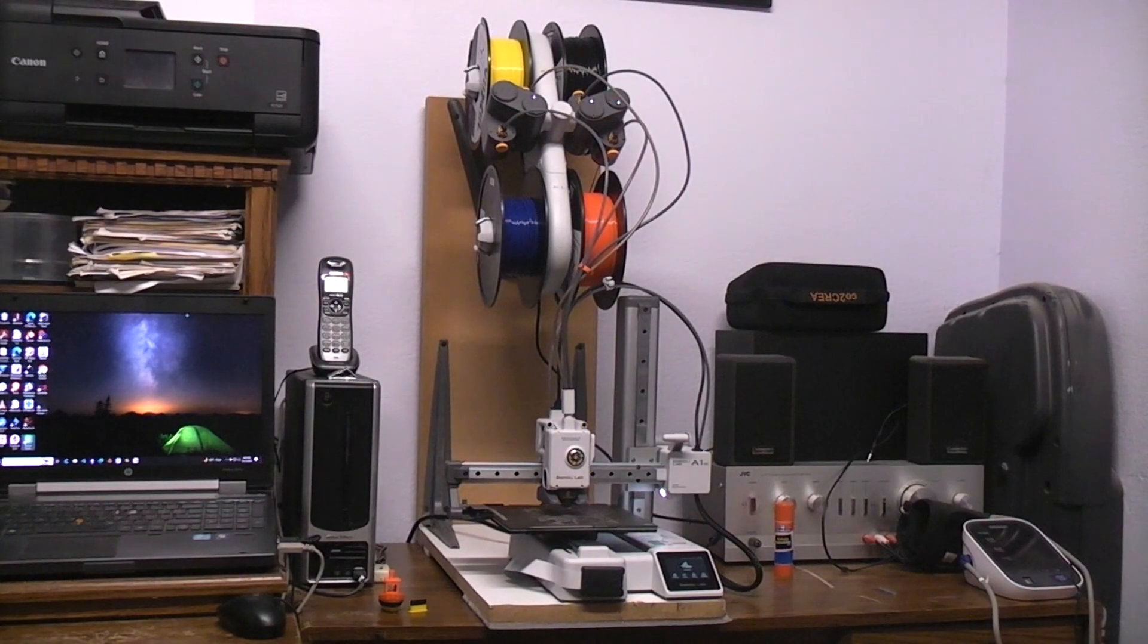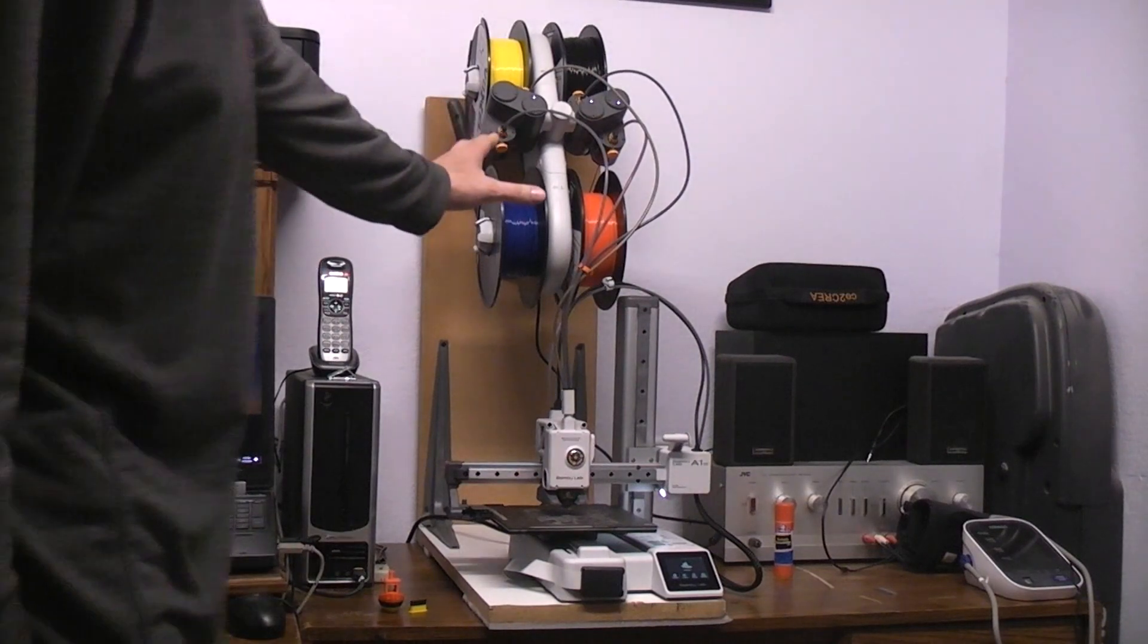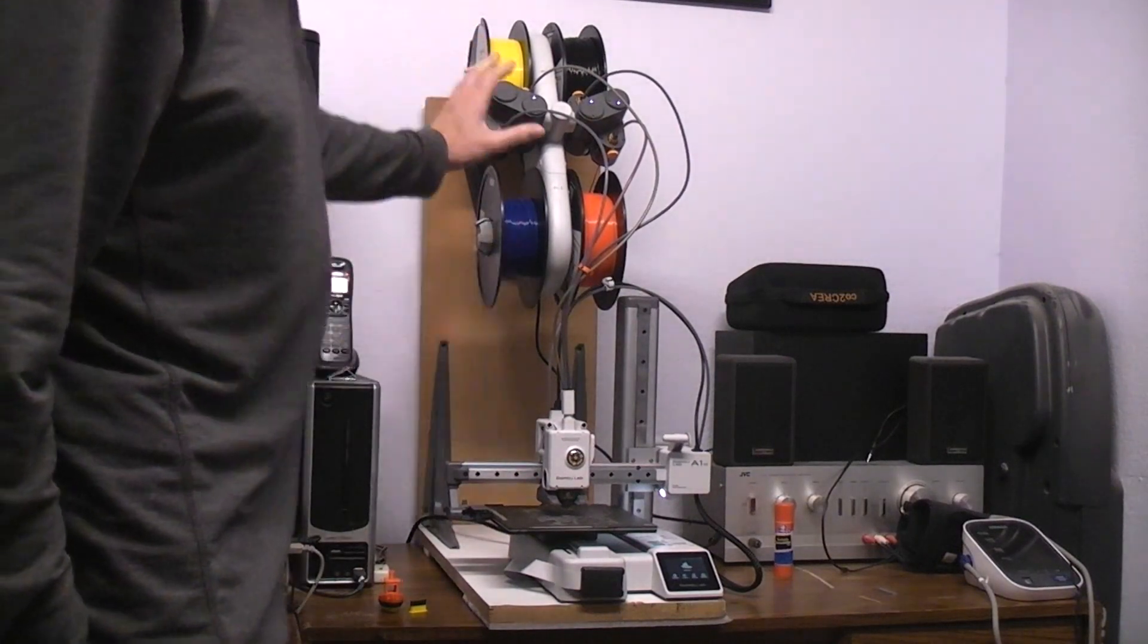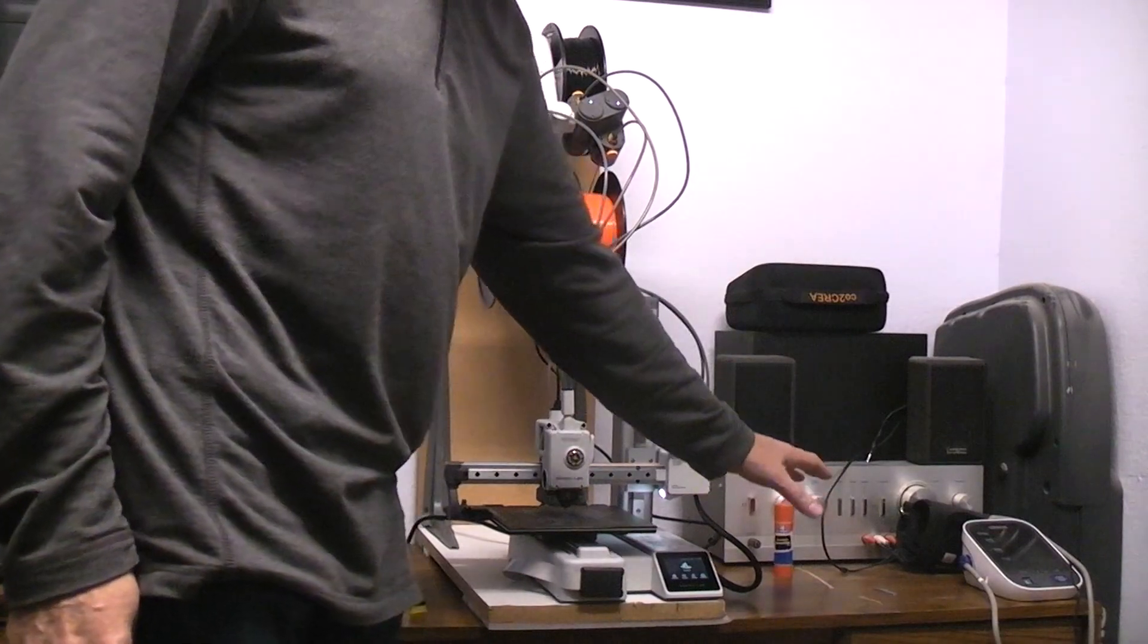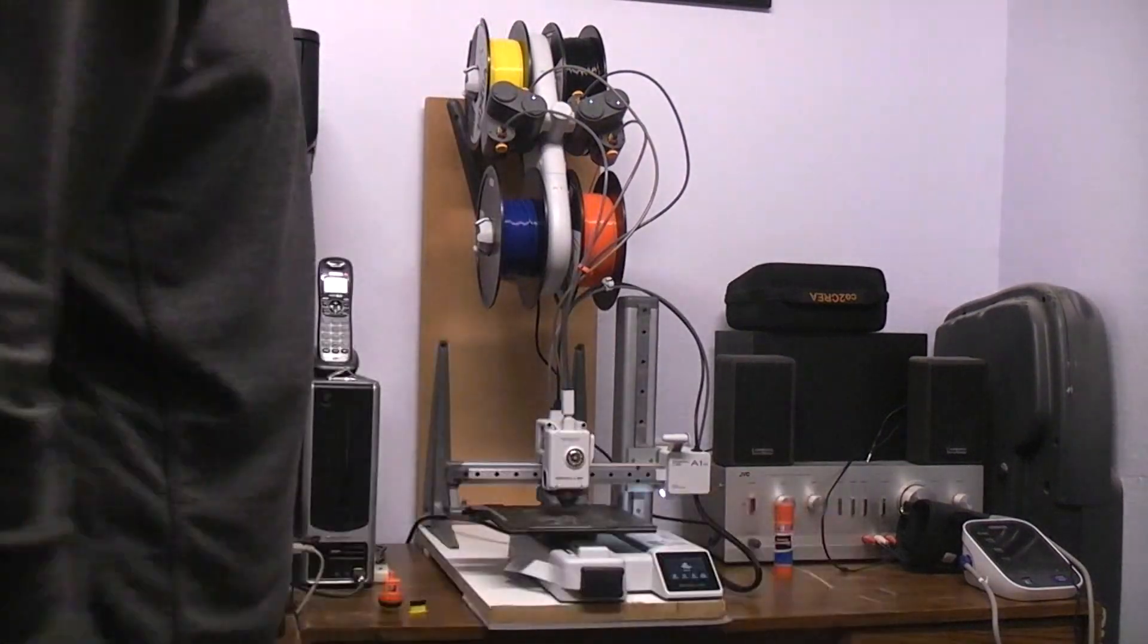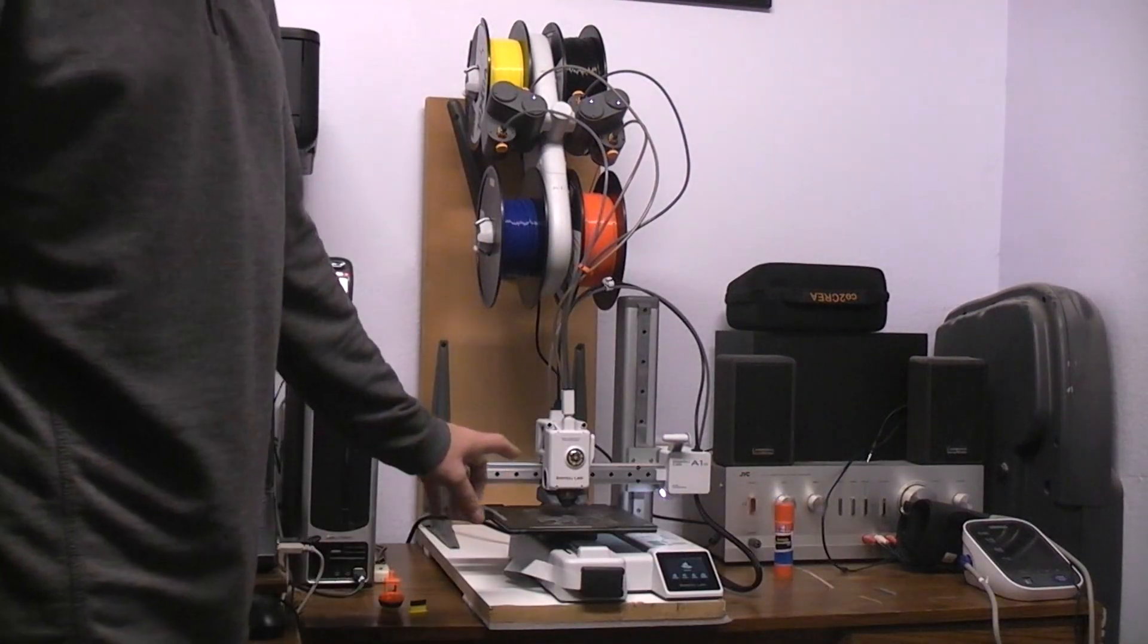Okay, I've got my Bamboo Labs A1 Mini with the AMS Lite instead of the regular AMS. Normally of course this AMS four spool color change sits over on this side and takes up more space than the printer.